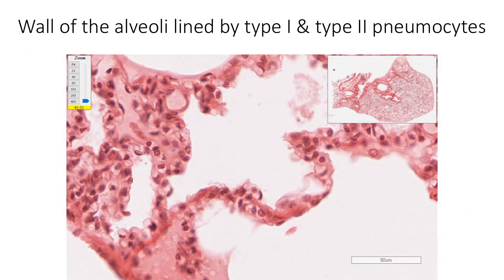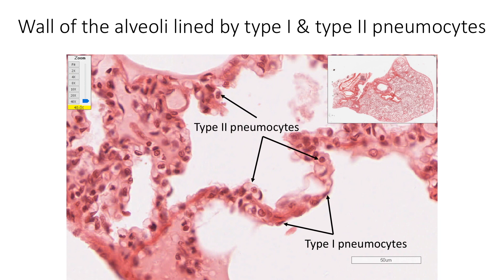Walls of the alveoli are lined by Type 1 and Type 2 pneumocytes. Type 1 pneumocytes are squamous cells which are fewer in number but, because of their larger size, occupy a larger surface area; these cells help in gas exchange. Type 2 pneumocytes are cuboidal cells with lamellar bodies in their cytoplasm; although more in number, they occupy less surface area. They help in secreting surfactant, which reduces surface tension and prevents collapse of the alveoli. Surfactant secreted by Type 2 pneumocytes is different in composition from the surfactant secreted by Clara cells. An increase in the number of Type 2 pneumocytes suggests alveolar injury and repair.